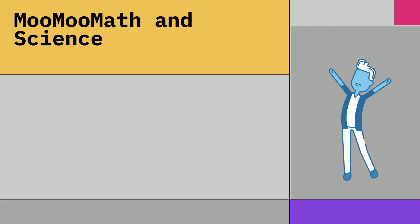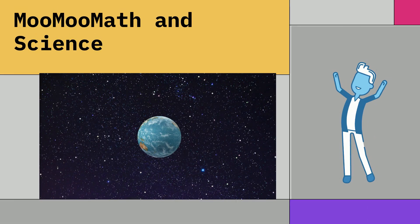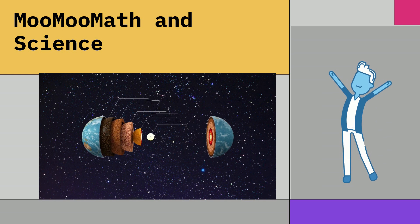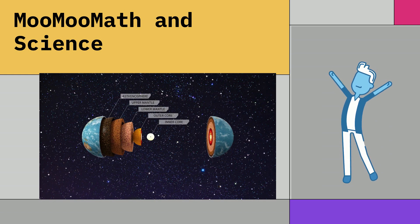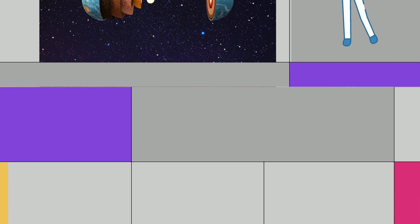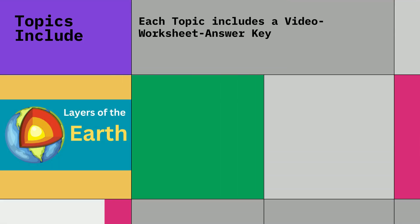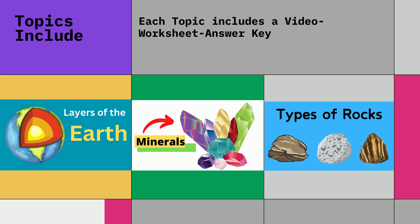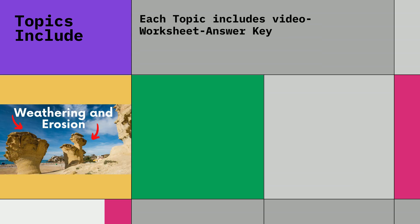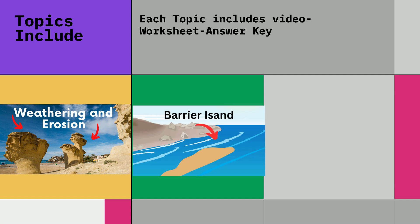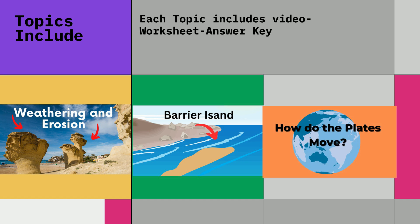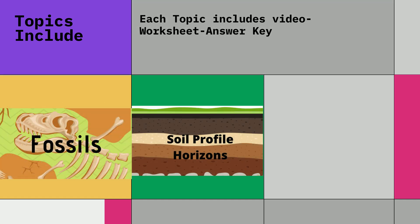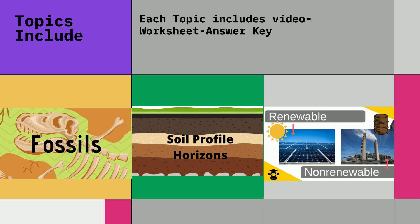Moomoo Math and Science is excited to present an educational course on Earth Science, and more specifically the Geology Unit. Topics covered include layers of the earth, what is a mineral, types of rocks, erosion, transportation, and deposition, deltas, barrier islands, and salt marshes, plate tectonics, fossils, soil, and renewable and non-renewable resources.